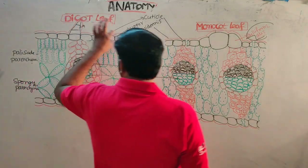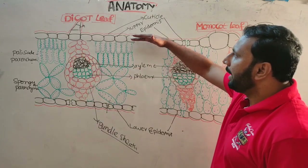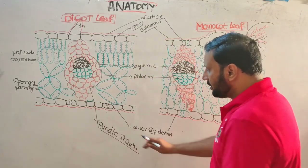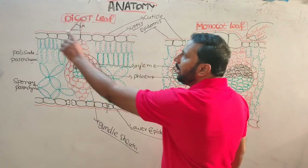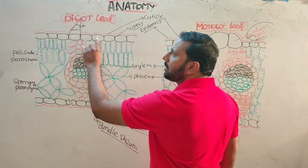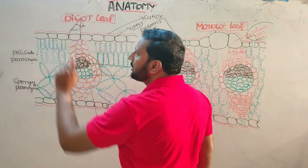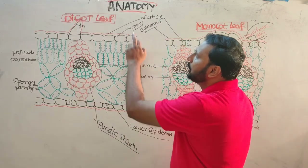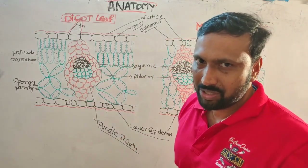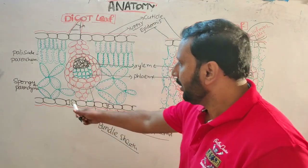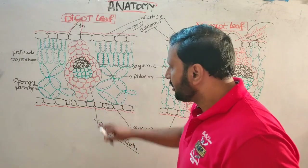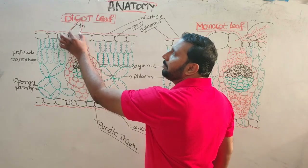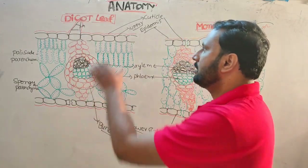In dicot leaf, the epidermis on the adaxial surface is called upper epidermis, and on the abaxial surface is called lower epidermis. Epidermal cells are barrel-shaped and arranged compactly. Both upper and lower epidermis are covered by cuticle, which controls transpiration. More stomata are restricted to the lower epidermis. Epidermal cells also form hair.